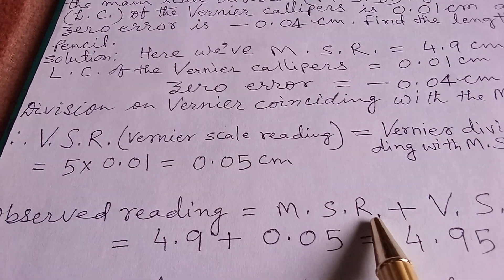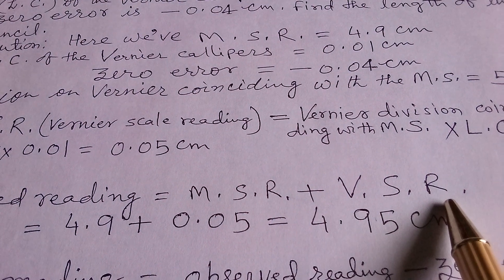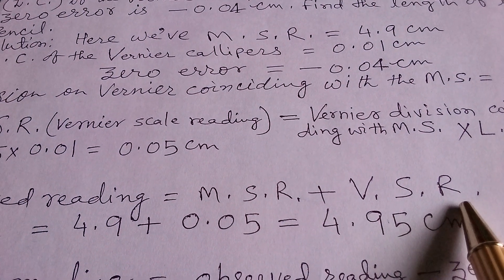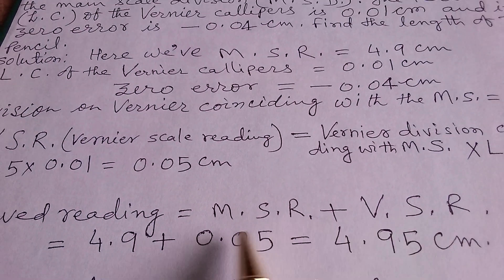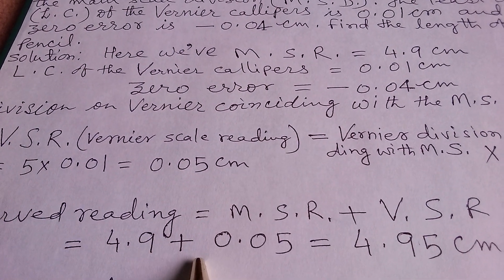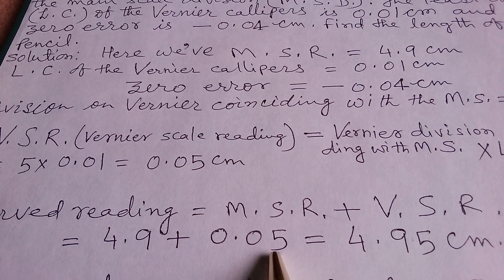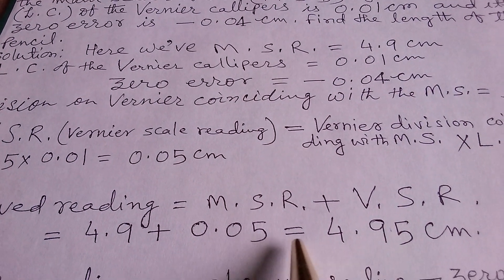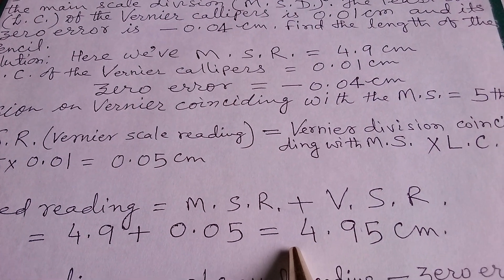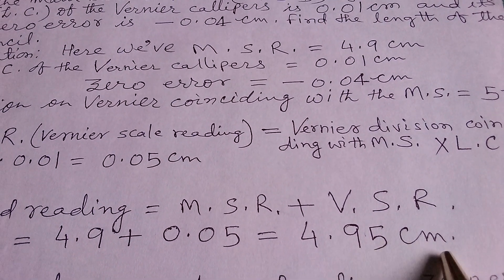Now, the observed reading = main scale reading + vernier scale reading = 4.9 + 0.05 = 4.95 cm.